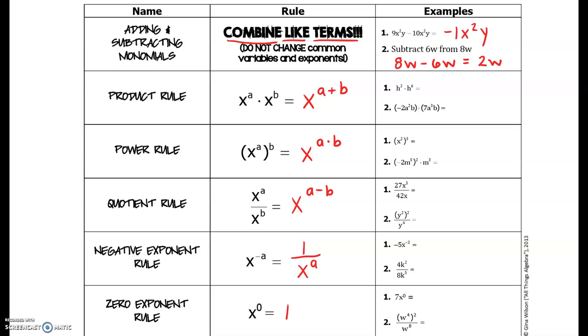Now the product rule examples: when you're adding, add two plus six, that gives you h to the eighth power. Now if there's a coefficient involved, you will actually multiply the coefficients. So we'll take negative two times seven, that would give us negative 14. And we will add the exponents, so two plus three would give us a to the fifth, and one plus one would give us b to the second power.